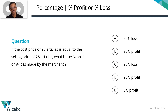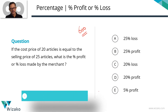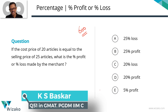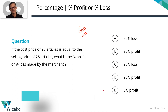This is an easy GMAT problem-solving question — a sample question on computing percentage profit and percentage loss. We classify this as a 600-level question. The problem states: if the cost price of 20 articles is equal to the selling price of 25 articles, what is the percentage profit or percentage loss made by the merchant?